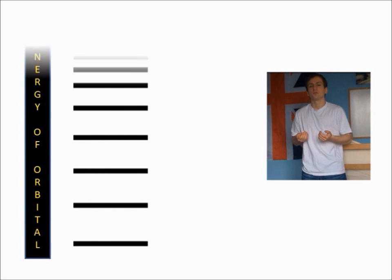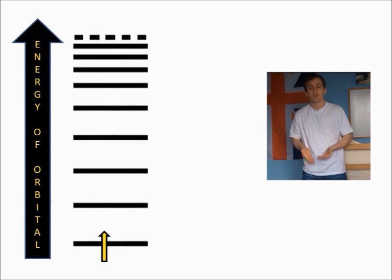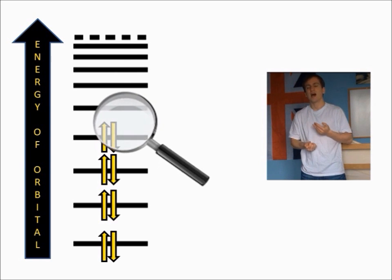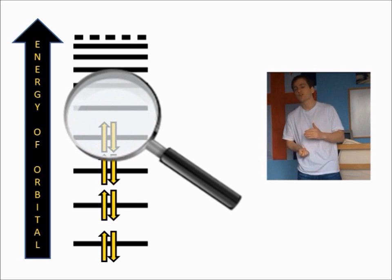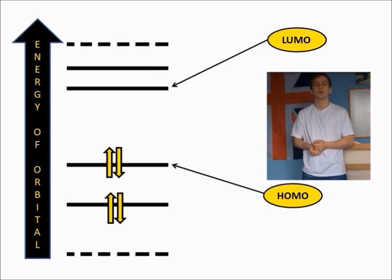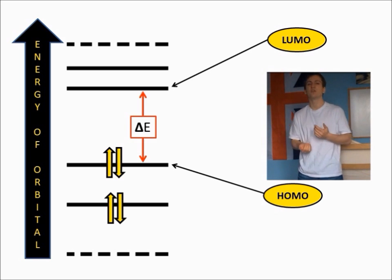When atoms bond, the atomic orbitals overlap to form new orbitals, molecular orbitals, but we still fill these from the lowest energy upwards. Once we've assigned all our electrons to our molecule, we're going to reach a point where there's vacant molecular orbitals that haven't been occupied. The highest occupied molecular orbital is called the HOMO, and the lowest unoccupied molecular orbital is called the LUMO, and there's an energy difference, a band gap, delta E, between these two orbitals.